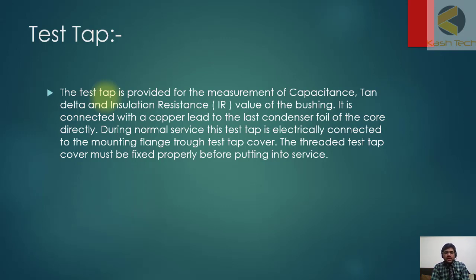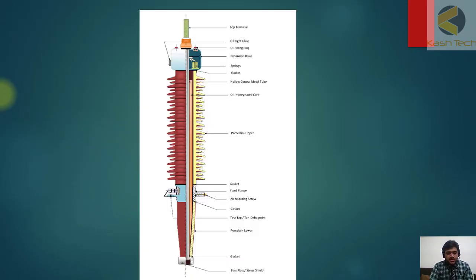It is connected with a copper lead to the last condenser foil of the core directly. During normal service, this test tap is electrically connected to the mounting flange through test tap cover. The threaded test tap cover must be fixed properly before putting into service.